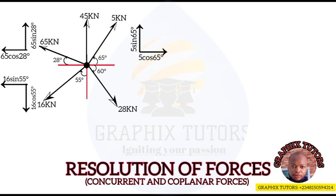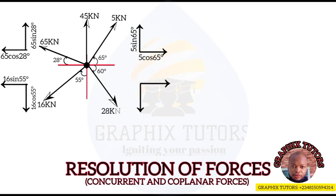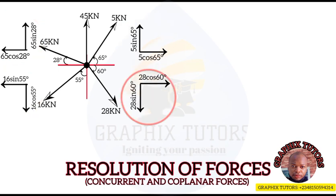For the 28 kilonewton, it is inclined to the horizontal, so the x-axis component is cosine: 28 cos 60, and the y-axis component is sine: 28 sin 60. Now that all forces have been resolved, we no longer deal with inclined forces. We focus on the resolved components — including the vertical 45 kilonewton force.